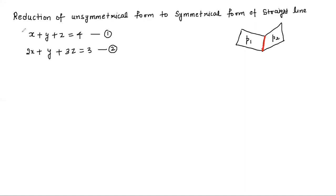So here we are going to intersect two planes. If we have two planes, we represent the line of intersection of these two planes. This equation represents a straight line — it means that we have an unsymmetrical form of a straight line. When two planes are given, the two planes represent one straight line. This is called unsymmetrical form.